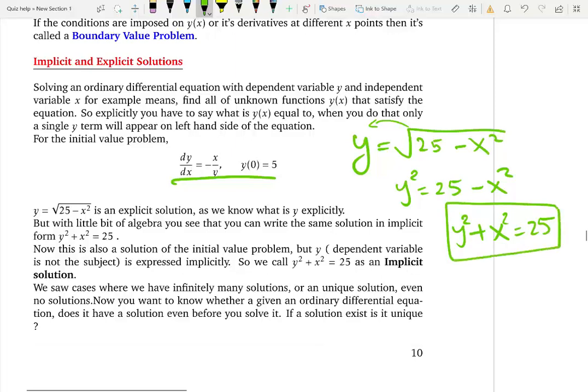I just did some algebraic simplification, but still this statement and this statement are the same thing. But in the second statement, y is not explicitly stated, which is what we are looking for. So this is an explicit solution but this is an implicit solution. Both of them are solutions because I didn't change anything, I just rewrote the solution.